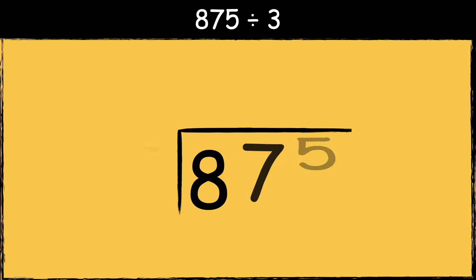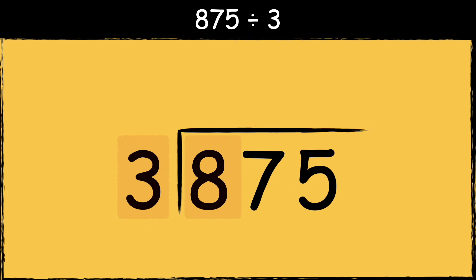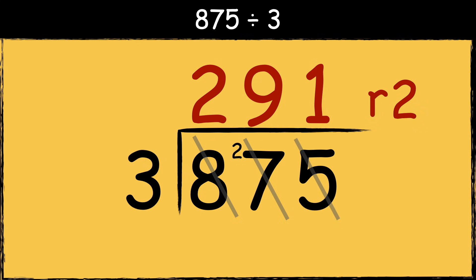Here's the last example: 875 divided by three. So we need to find out how many times the divisor fits into these numbers. Three goes into eight twice with two left over. Three goes into 27 nine times. And three goes into five once with two left over. As there are no more numbers to divide, this left over two is the remainder. So the answer is 291 remainder two.